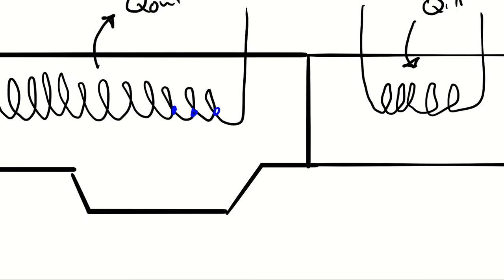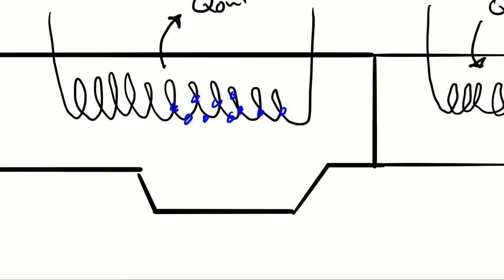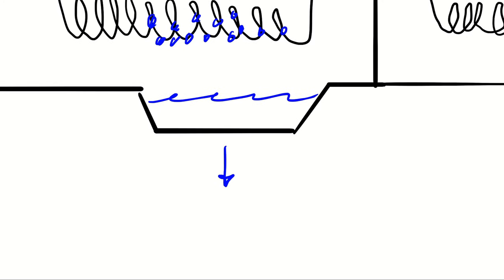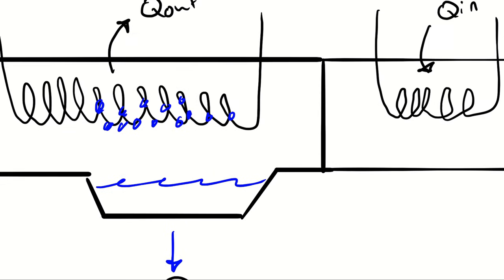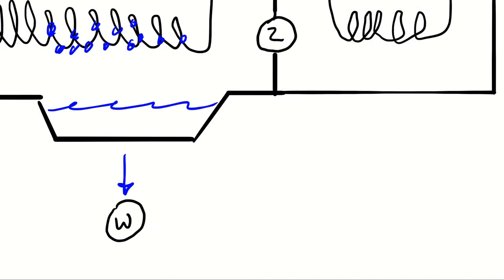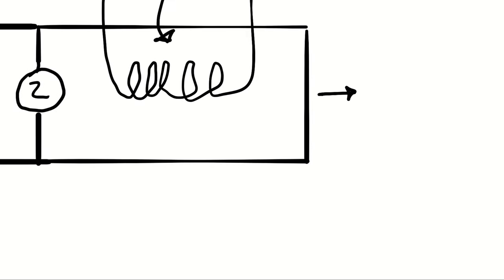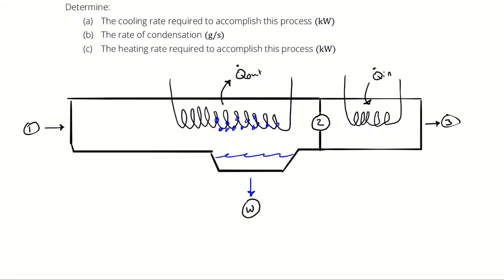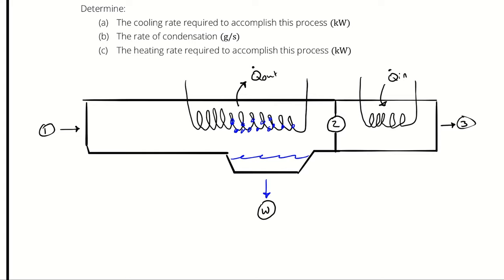Water gathers on the cooling coils as a result of the condensation process — a lot of water, in fact — and it leaves down here. I'll call that state W. I'll establish a state point between the cooling and heating processes: that's state point 2. Egress is state point 3 and ingress is state point 1. So we have cooling with dehumidification from 1 to 2, and then heating from 2 to 3.